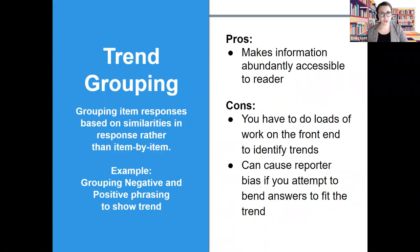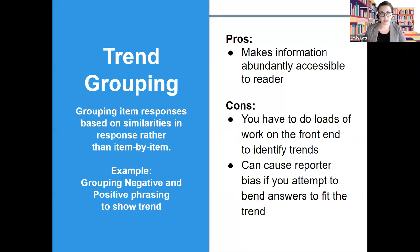Trend grouping is a great way to group item responses based on the responses themselves rather than by the instrument item. An example could be grouping item responses by negative and positive phrasing — instead of going item by item, you collect information based on negative and positive responses by participants. One pro for this structure is that it makes information abundantly accessible to a reader. However, there are cons: you have to do a lot of work on the front end to identify trends, and it can cause reporter bias if you attempt to bend answers to fit the trend.